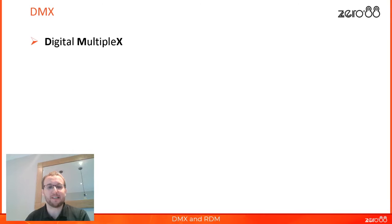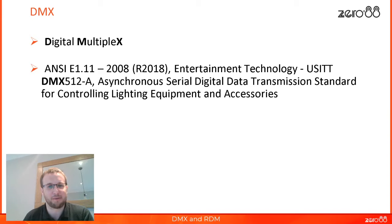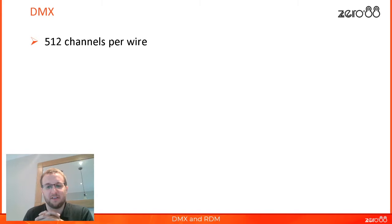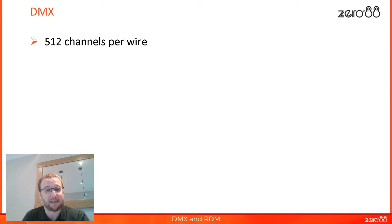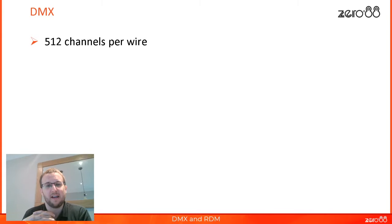DMX stands for Digital Multiplex — or actually, it officially stands for ANSI E1.11 2008 revised in 2018, but we'll just call it Digital Multiplex. DMX supports 512 channels down a single cable. When it was developed back in the 1980s, that meant 512 par cans or fresnels, which was way more than you could imagine in a lighting system. But nowadays we're using DMX for moving lights, LEDs, even small media servers, using many more channels for just one fixture. So 512 is no longer that many, and we often need another universe — a second cable — or a third or fourth. You can easily get into the hundreds of universes on some larger setups.